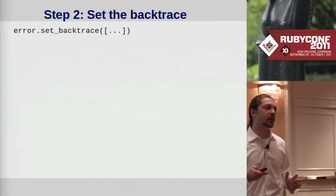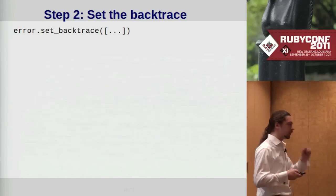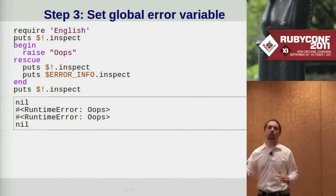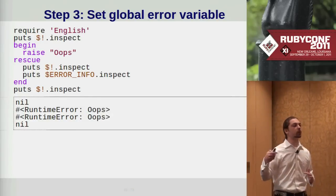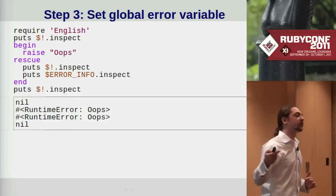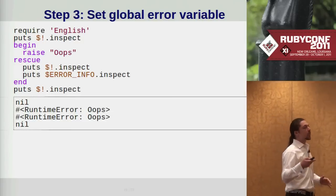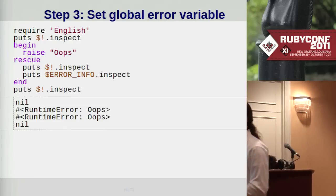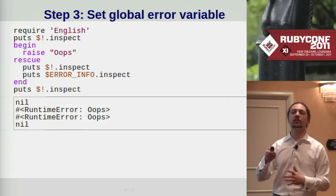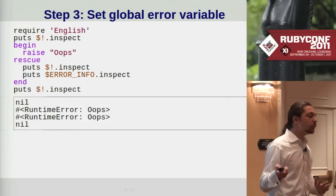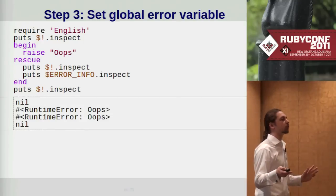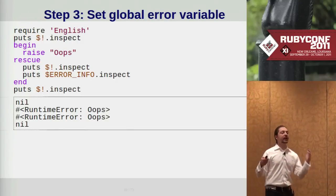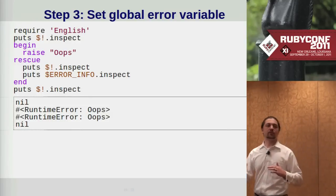Step two in raise is setting the backtrace, which it does with the set_backtrace method on exception. Step three, it sets the global error info variable. This variable is spelled $! out of the box, but if you require the English library, it's aliased to the more readable $ERROR_INFO global. This global always contains a reference to the currently active exception, if any. Prior to raising an exception, the error info variable is nil. During the rescue, it is set to that exception. After the rescue block ends, it is nil once again.